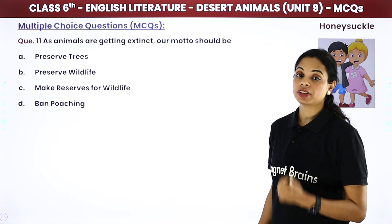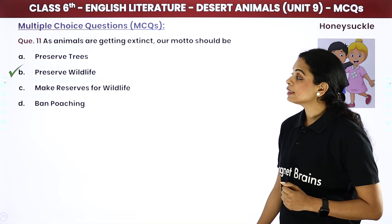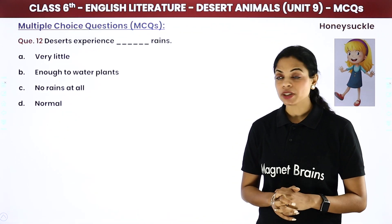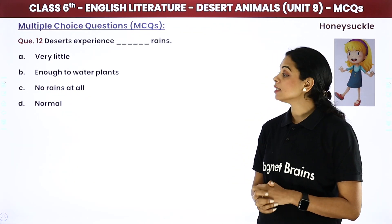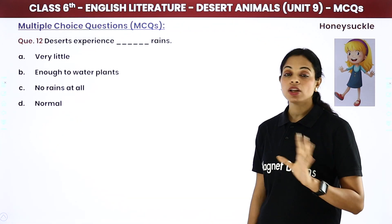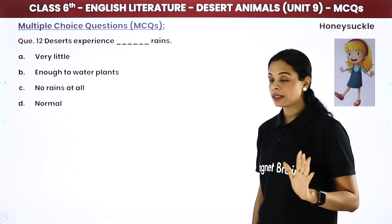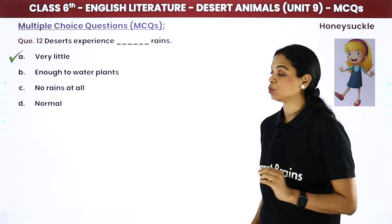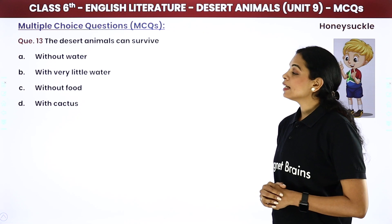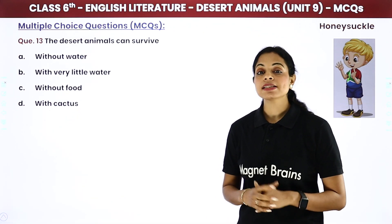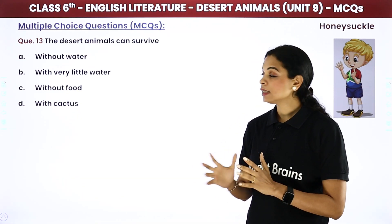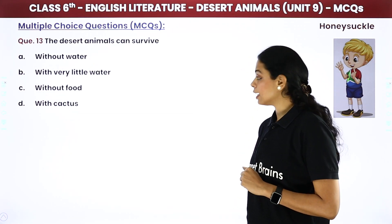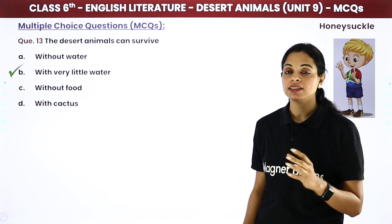Deserts experience — deserts में कितनी बारिश होती है? Options: heavy rain, very little, enough to water plants, or no rains at all. The answer is: very little — वहाँ बहुत ही कम बारिश होती है। Desert animals can survive — बिना पानी के, बहुत कम पानी के साथ, बिना खाने के, या बिना cactus के? The answer is: with very little water.